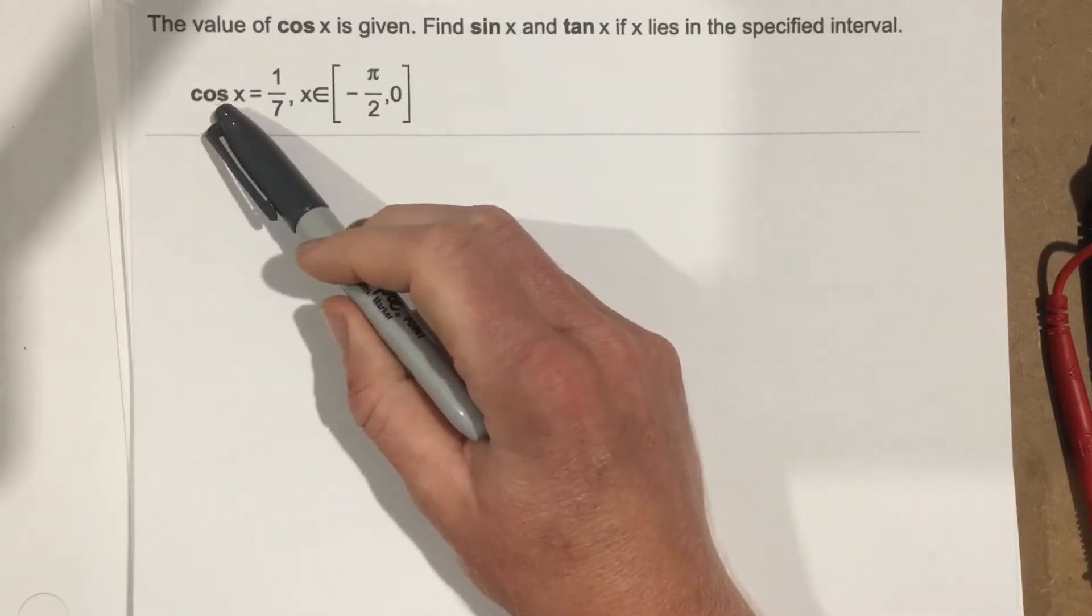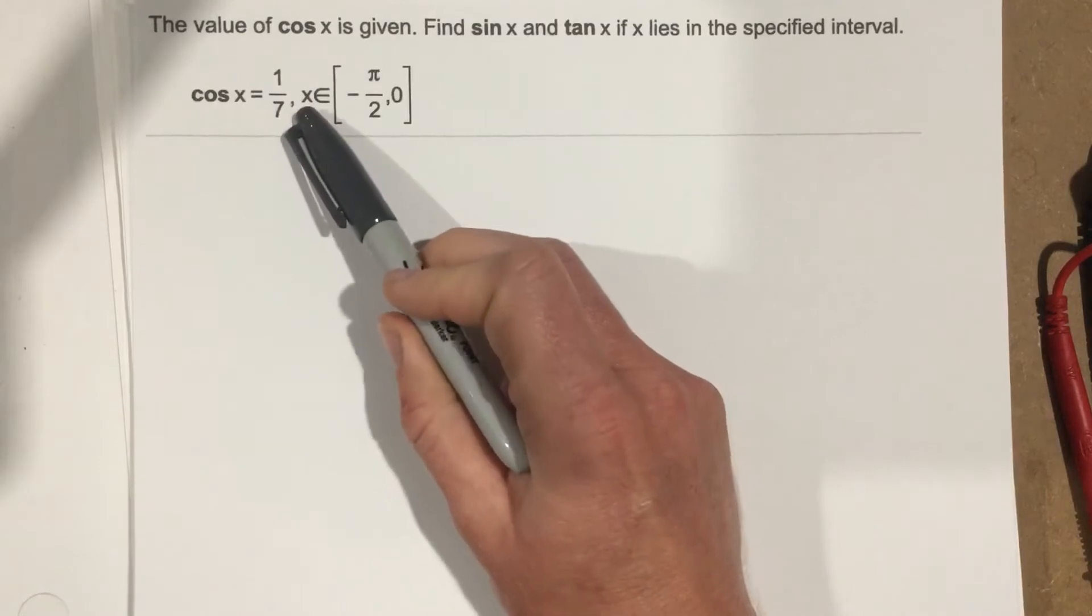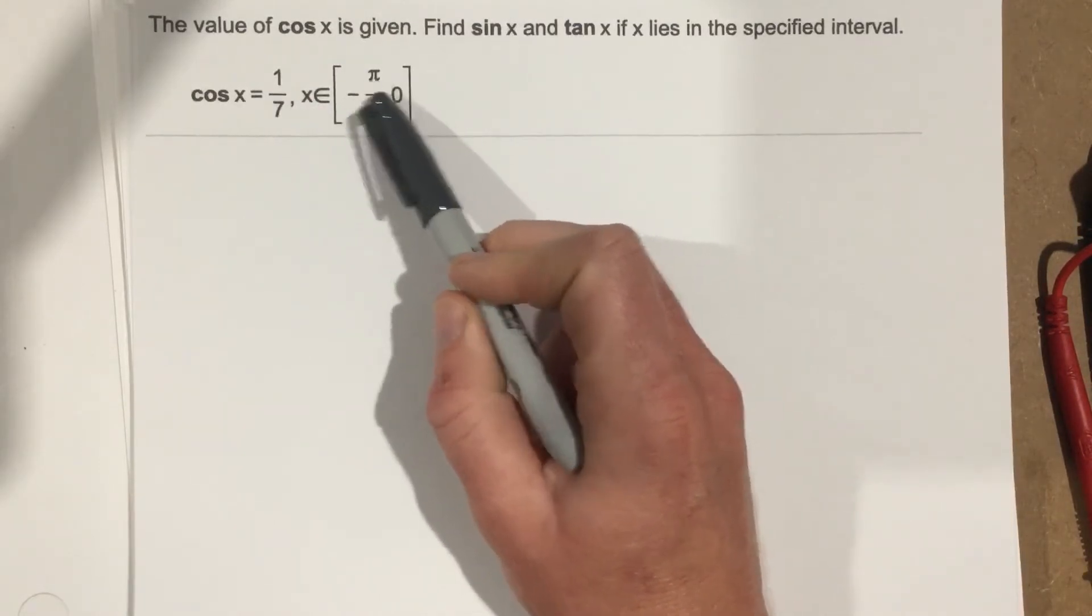They give you that cosine x is 1 over 7, so cosine x is positive. And they say that x is going to lie between negative pi over 2 and 0.